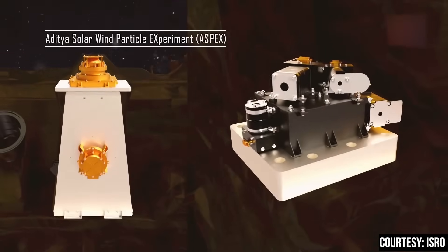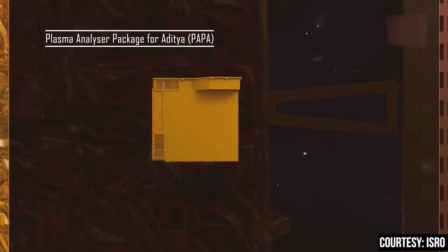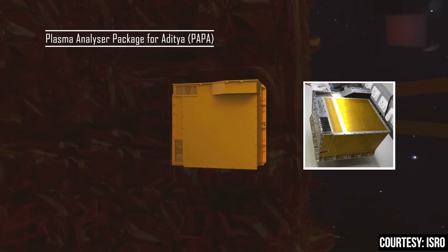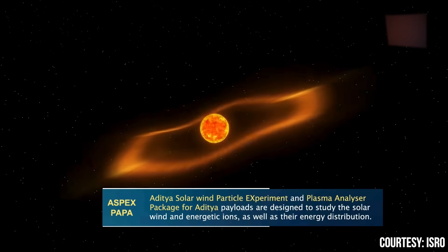Fifth, the Aditya solar wind particle experiment, short form Aspex. Sixth, the plasma analyzer package for Aditya, short form PAPA. These two instruments study the solar wind.